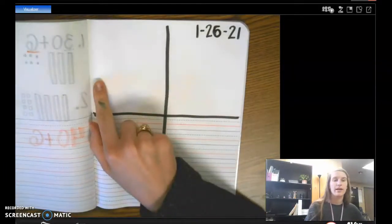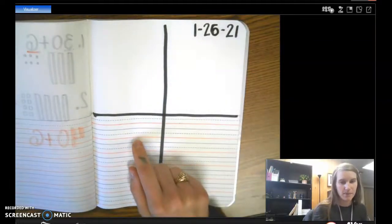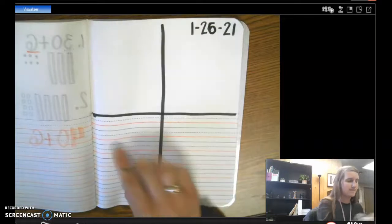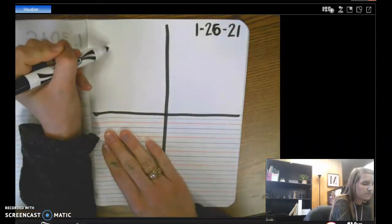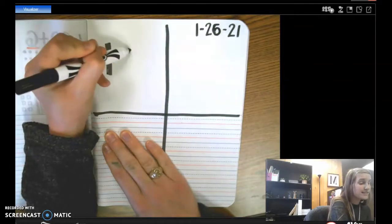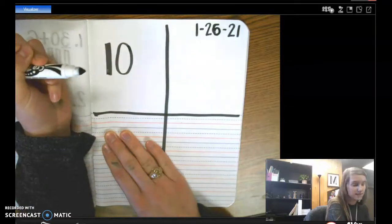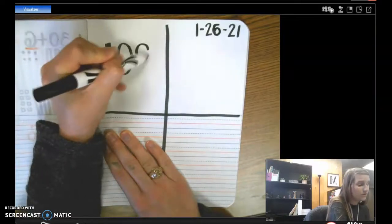Okay, so the number that we're going to be working with is 109. Let's write it in standard form. 1 for 100, 0 in the 10's place, 9 in the 1's place.